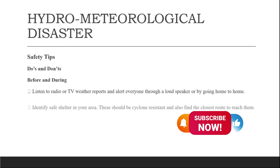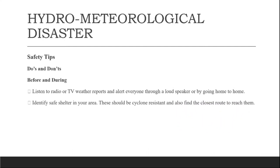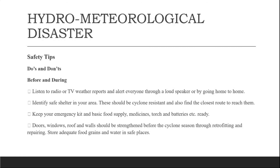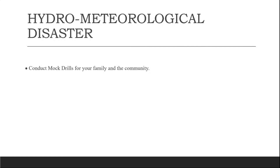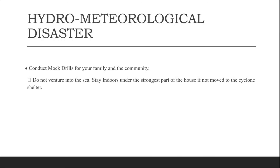Third, keep your emergency kit with basic food supplies, medicine, torch, and batteries ready. Fourth, doors, windows, roofs, and walls should be strengthened before cyclone season through retrofitting and repairing. Store adequate food grains and water in safe places. Conduct more drills for your family and community. Do not venture into the sea. Stay indoors under the strongest part of the house, or move to a cyclone shelter if needed. Remain indoors until advised that the cyclone has passed.